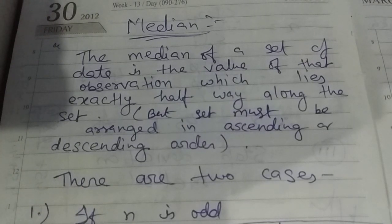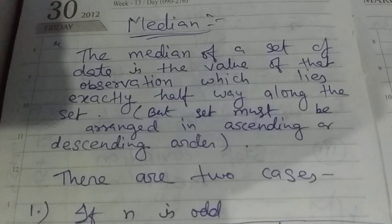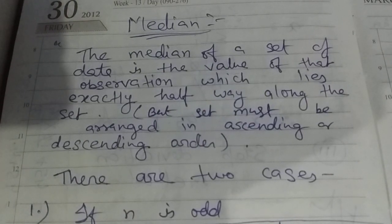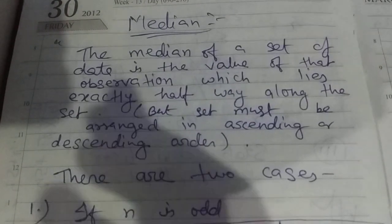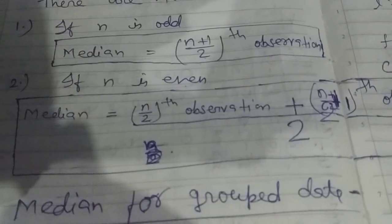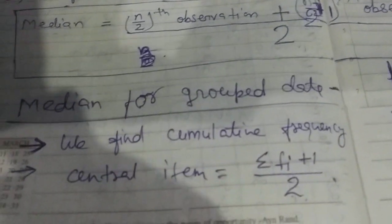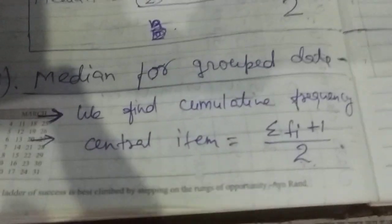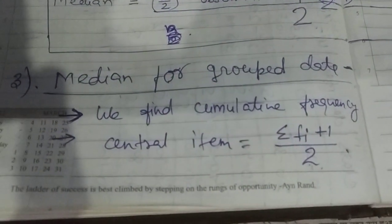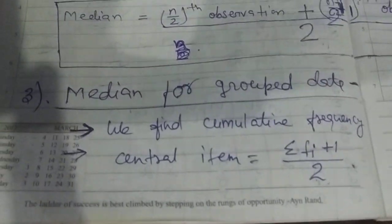The median is the midpoint, and there are two cases: one where n is odd and one where n is even. For grouped data, which is discrete and continuous, cumulative frequency is used.